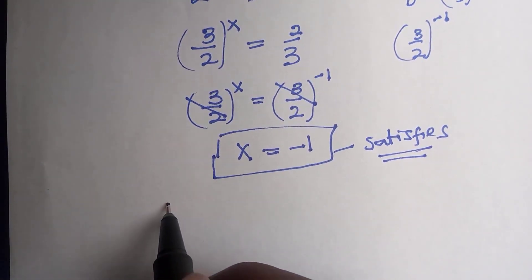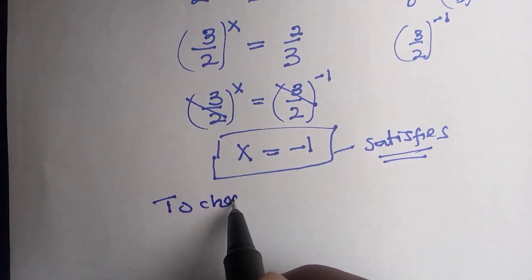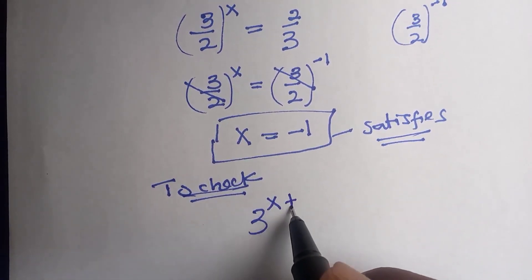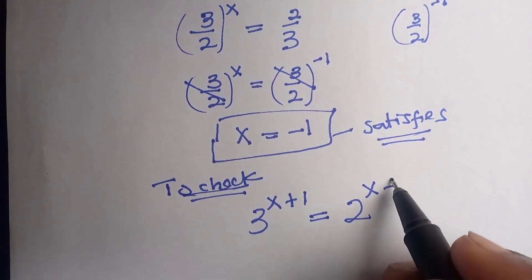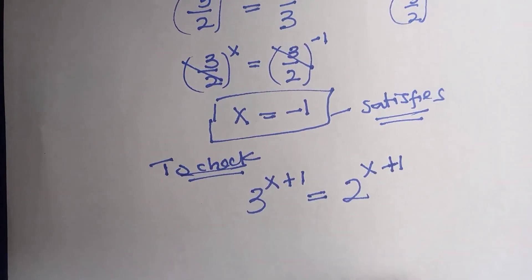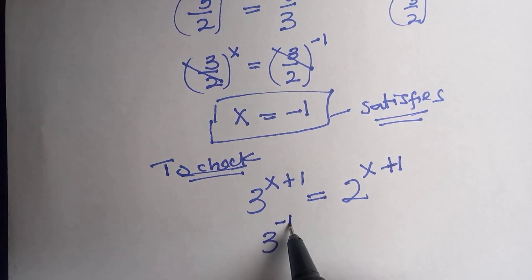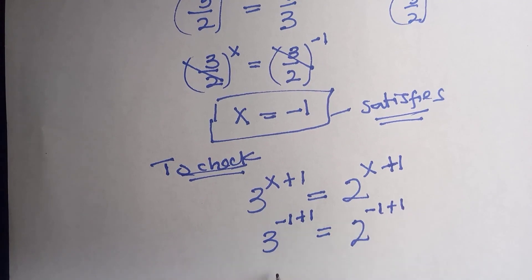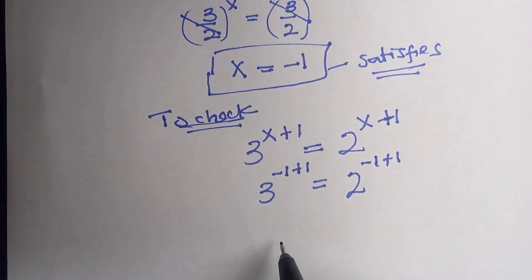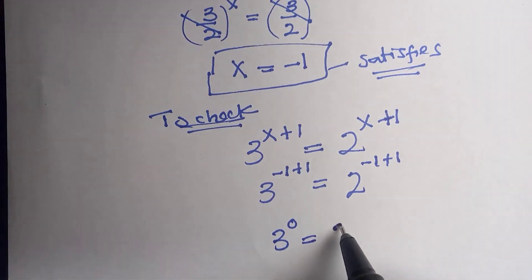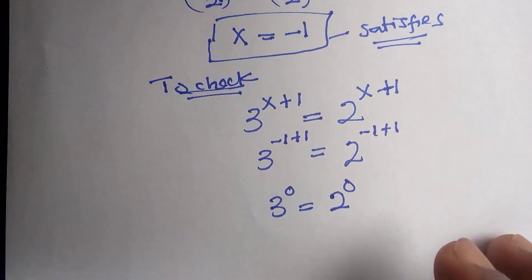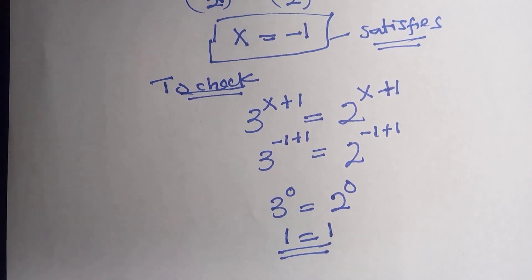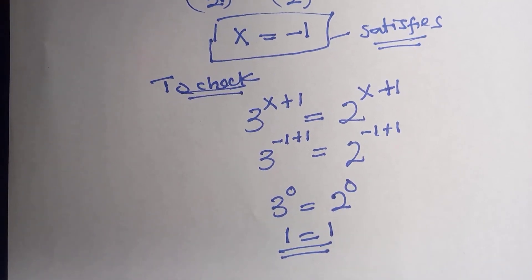Let's verify whether minus 1 satisfies the equation. From the original equation, 3 raised to the power of x plus 1 equals 2 raised to the power of x plus 1. Inserting x equals minus 1: 3 raised to the power of minus 1 plus 1 equals 2 raised to the power of minus 1 plus 1. Minus 1 plus 1 is 0, so we have 3 raised to the power of 0 equals 2 raised to the power of 0. Any value raised to the power of 0 is 1, so 1 equals 1 — which is true. So x equals minus 1 satisfies the equation.